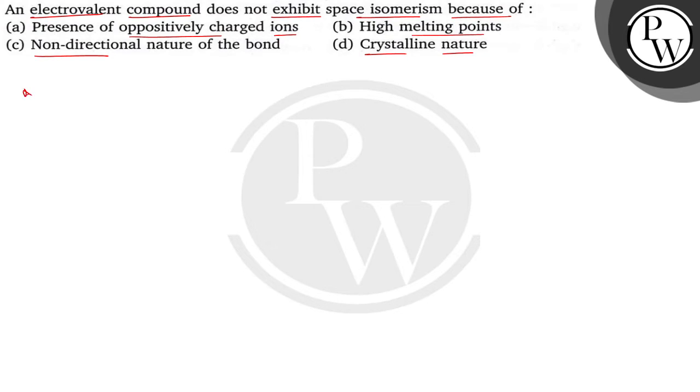So, let's do the question. Here, the electrovalent compound - electrovalent compounds are ionic compounds.